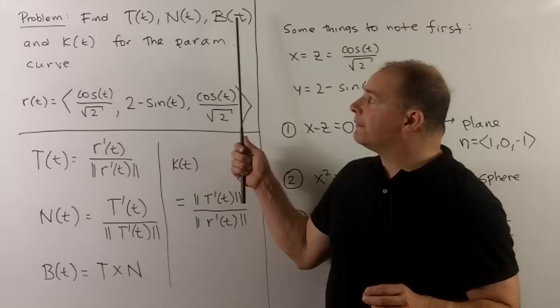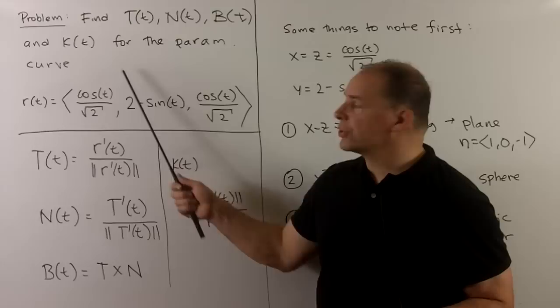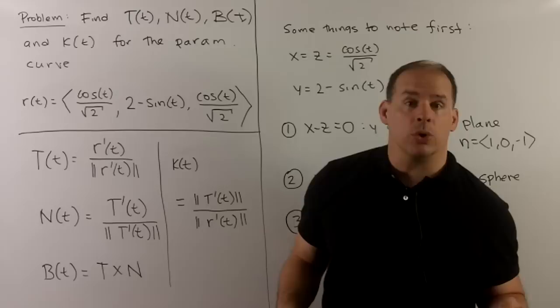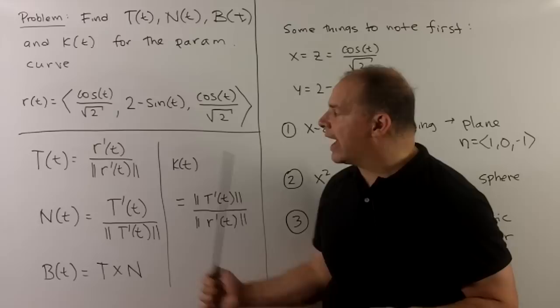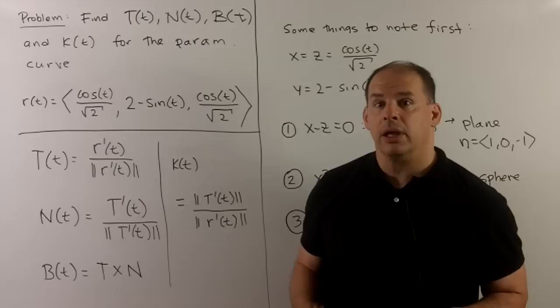Consider the following problem: we want to find the Frenet-Serret frame and the curvature of the parametrized curve r(t) = ⟨cos(t)/√2, 2 - sin(t), cos(t)/√2⟩. Not only will this give us a workout for doing these calculations, but we'll also look at the pictures and interpret our answers.